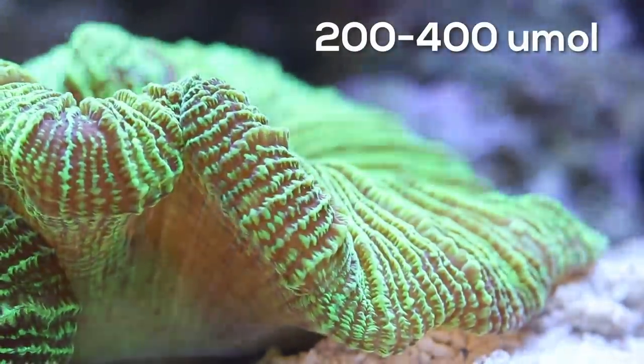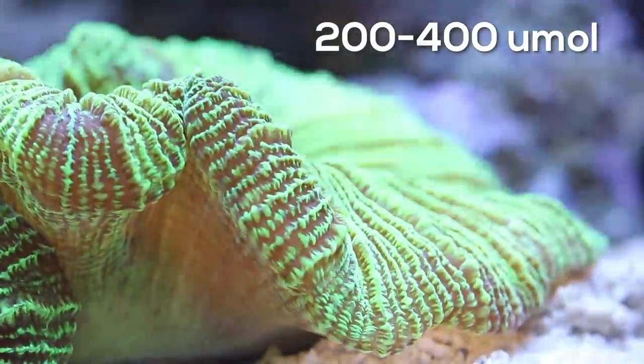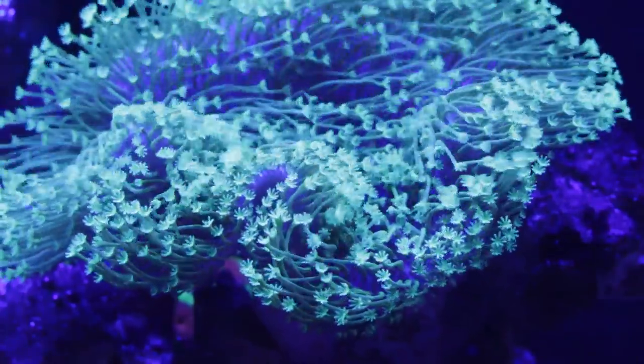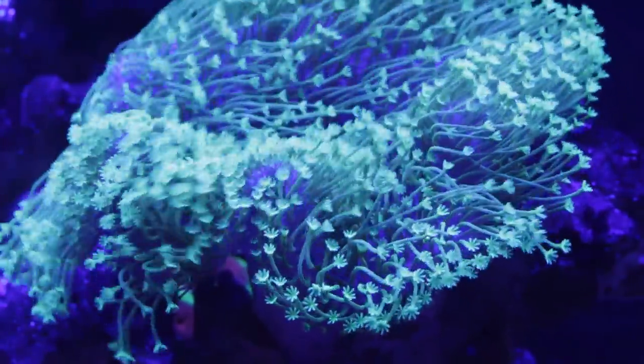Boosting the PAR up to 200 to 400 will bring out a little more coloration, but could also reduce growth rates. It's a tradeoff many reefers accept. Going above this PAR range inhibits coral growth and may lead to bleaching.